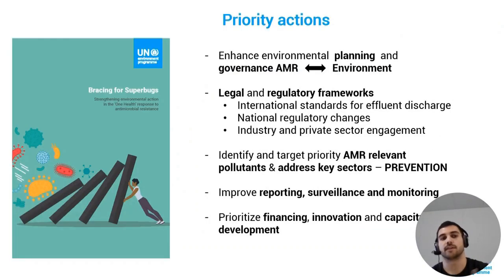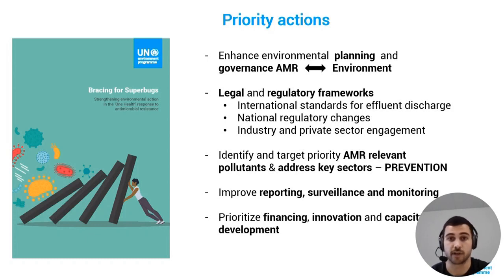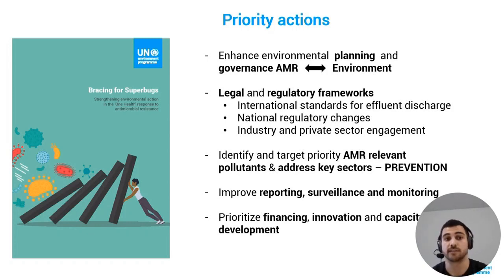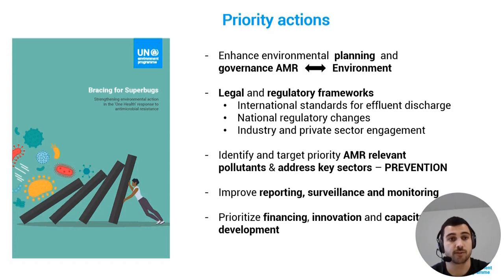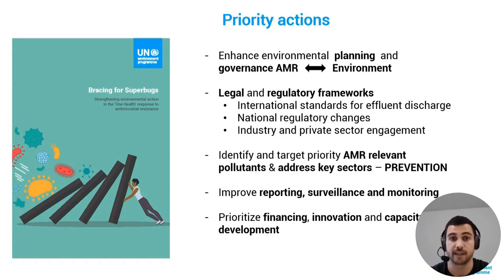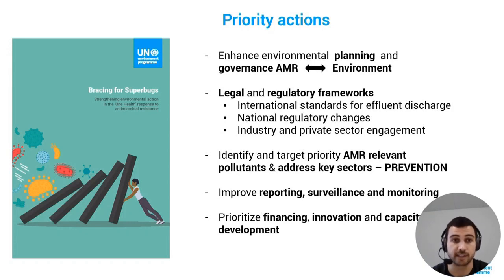The report not only provides a rundown of the available evidence but also identifies priority actions. It highlights the need to enhance environmental planning and governance between AMR and the environmental sector in a bidirectional way. It also addresses legal and regulatory frameworks, including international standards for effluent discharge, national regulatory changes, and industry and private sector engagement. It identifies the need to target priority AMR-relevant pollutants, improve reporting, surveillance, and monitoring, and prioritize financing, innovation, and capacity development.